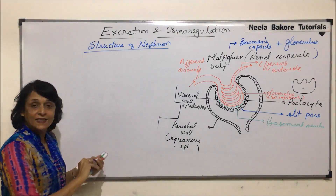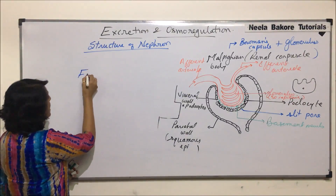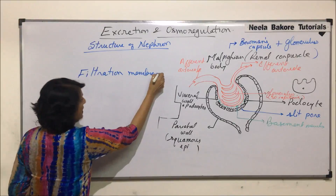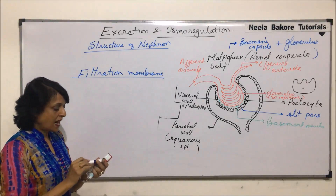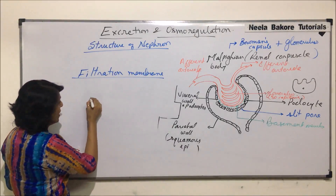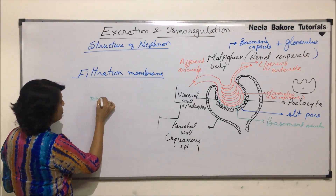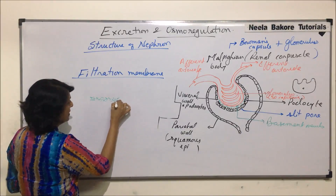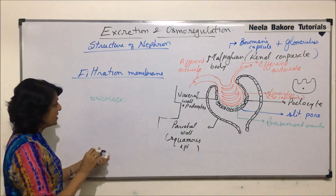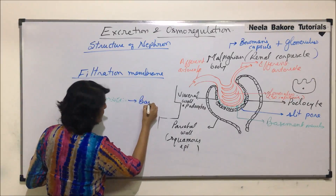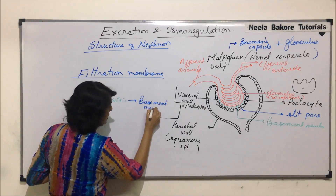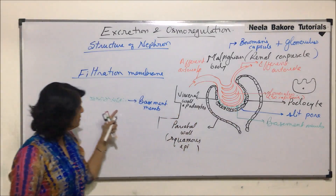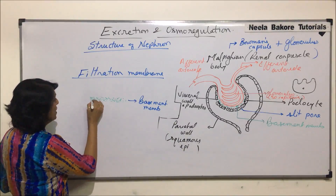If we draw it separately and in a slightly different manner, that would become the filtration membrane. This filtration membrane, as we said, is made up of three layers. We are using the same green for showing the basement membrane — this is our basement membrane here.